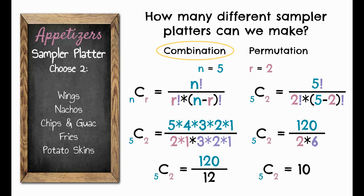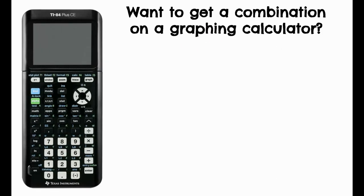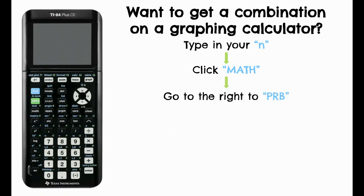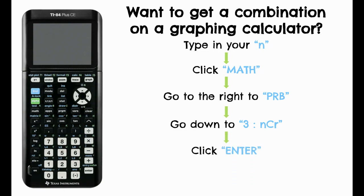Both methods require work, but the graphing calculator makes it much easier and quicker. To use it: first type in your n number, then click the math button underneath the alpha button on the left-hand side, go all the way to the right to PRB for probability, go down to the third option for nCr — that's the combination option — hit enter, and then type in your r value and hit enter to get your answer.